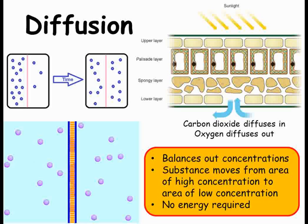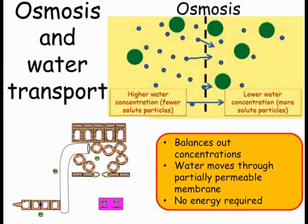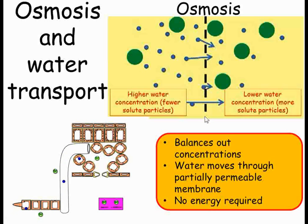Water moves from the soil into the root hair cell by osmosis. Osmosis is where water moves from an area where there's a low concentration of a solution to a high concentration, across the cell membrane. The dissolved stuff like minerals are too large to move through the cell membrane on their own, so the water particles move into the cell to balance out the concentrations. Because the membrane allows some particles through but not all, it's called partially permeable. As you can see in the diagram, the root hair cell has a large surface area to help it absorb lots of water through osmosis.